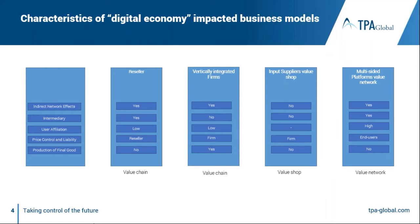Key characteristics distinguishing these business models include price control, liability, user affiliation, and intermediary role. For Uber, price is determined by the number of users at a given time. For Airbnb, control and liability for maintaining accommodation always rests with the supplier, not Airbnb. In vertically integrated forms, the firm determines prices and also holds control and liability, whereas in multi-sided platforms, control lies with the end supplier.